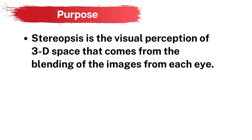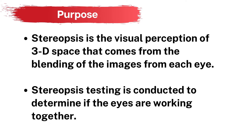When the brain is able to blend the separate images from each eye into one image, the child can perceive three-dimensional space and is said to have Stereopsis, or binocular vision. The purpose of this screening is to determine if the eyes are working together.